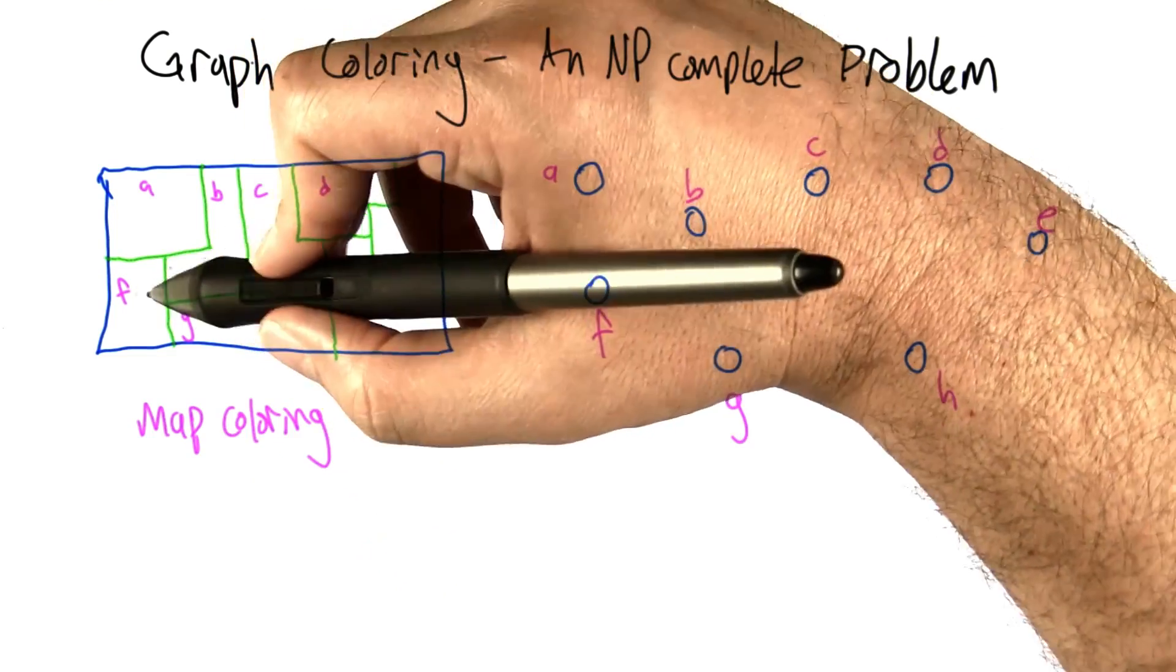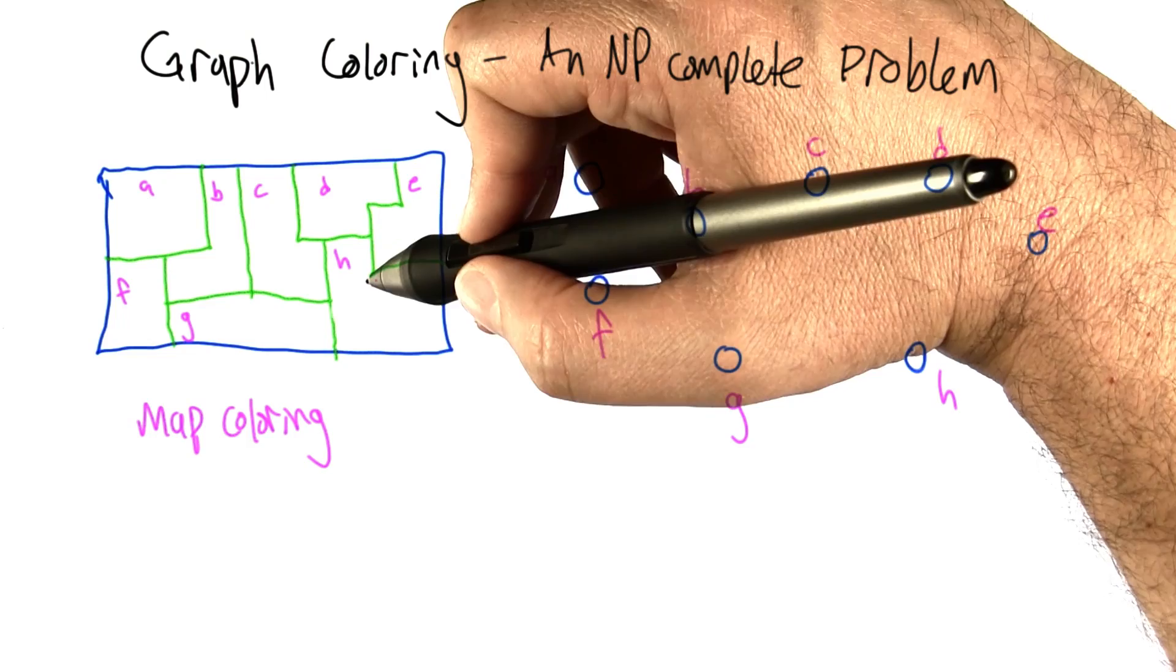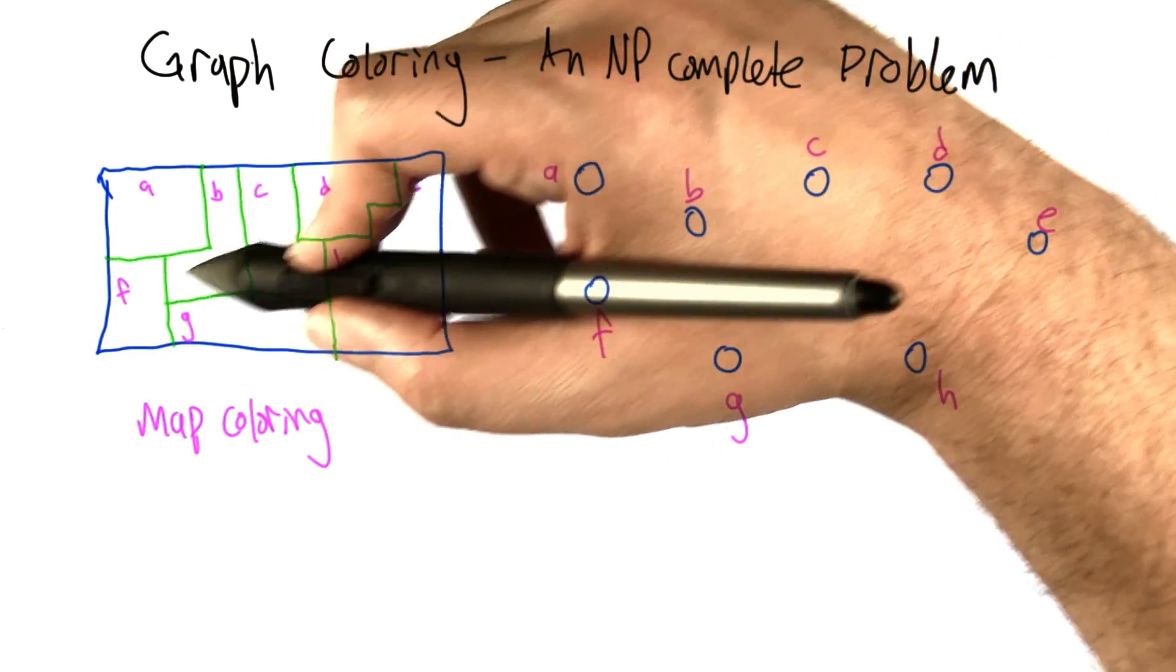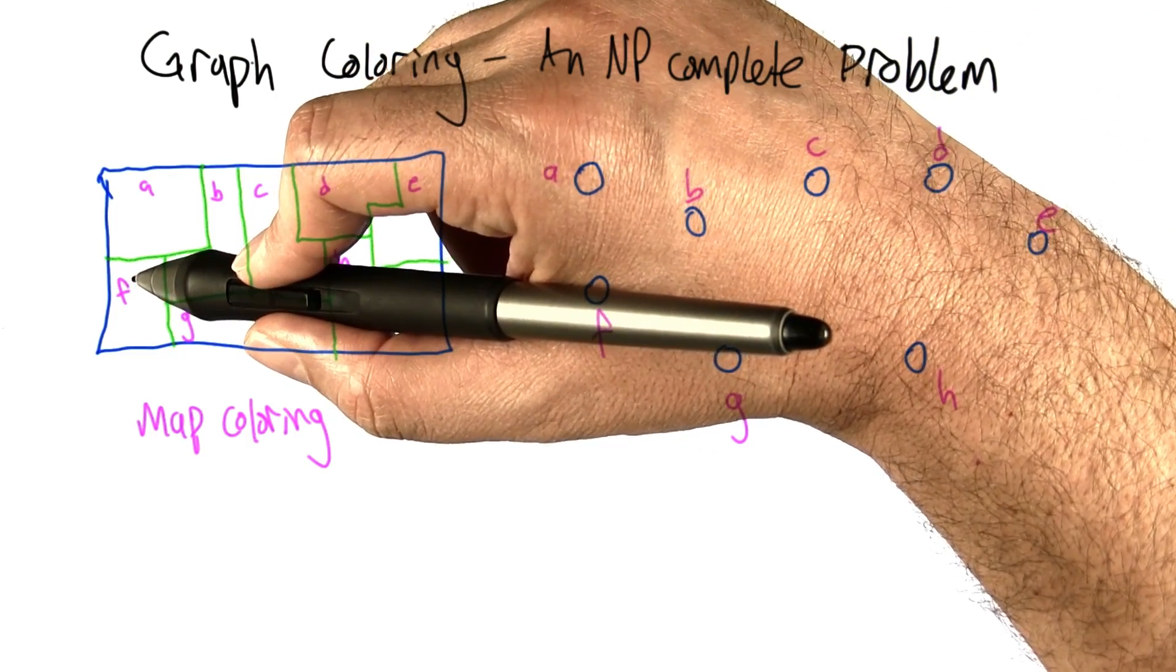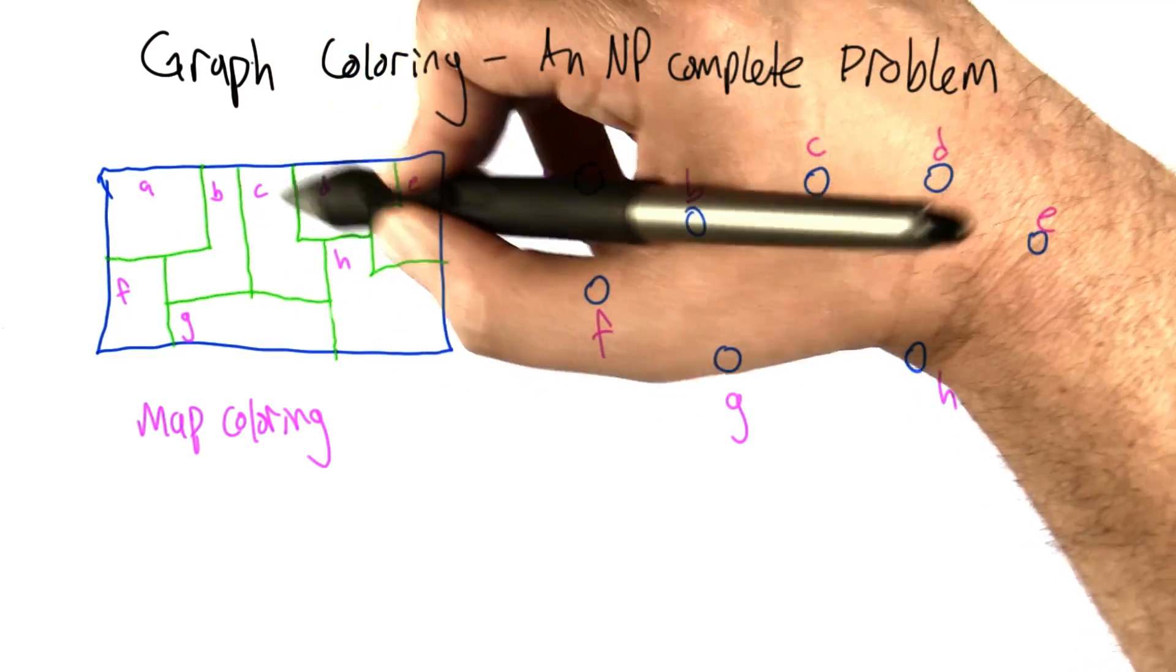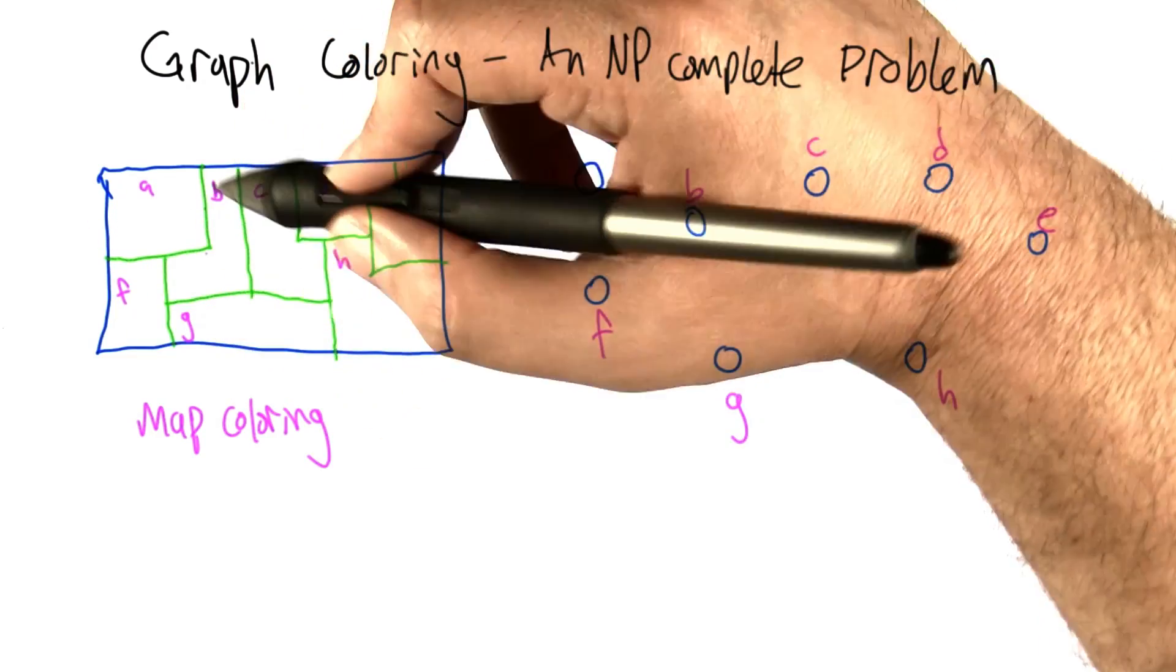And just to remind you, the idea there is that each of the regions in the map, we're going to assign some color to it with the constraint that there can't be the same color in two adjacent regions on the map because then it will kind of make it look like one big region.